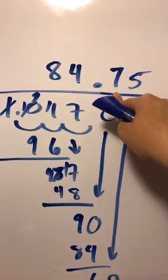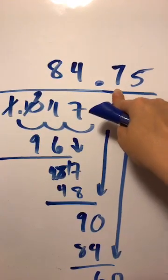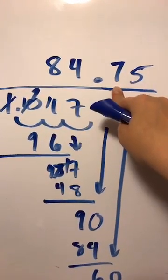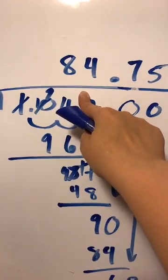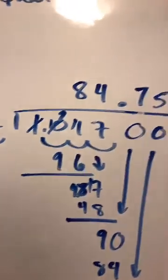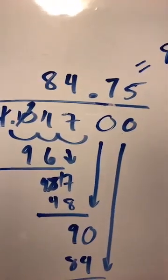Now the rule with rounding the whole number is if this number here after the decimal is higher than 5 then you would round this whole number up. So because 7 is higher than 5 you're going to round 84.75 to 85. Therefore your answer on your test is going to be 85.